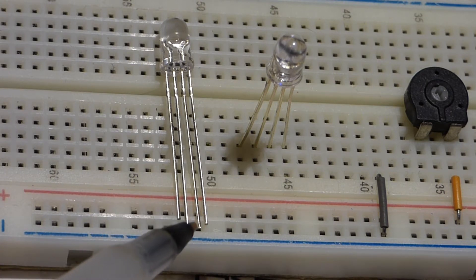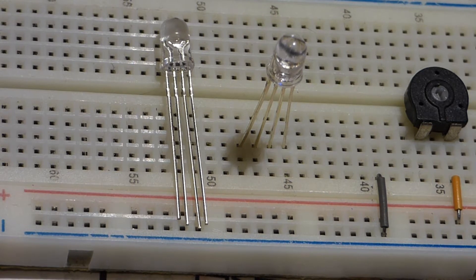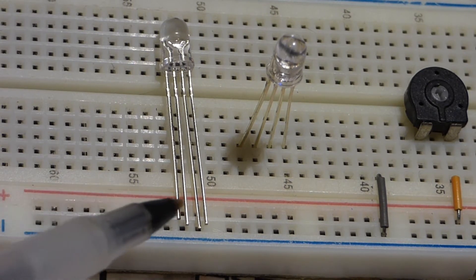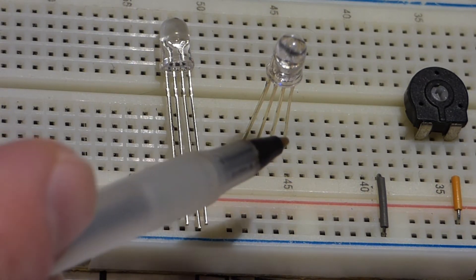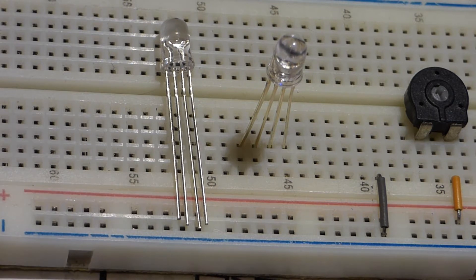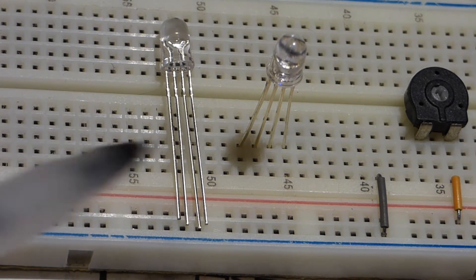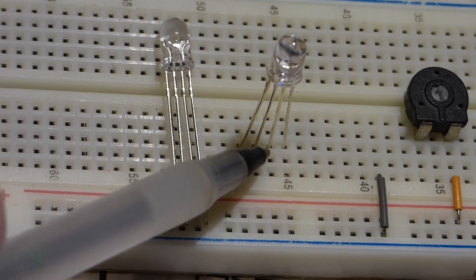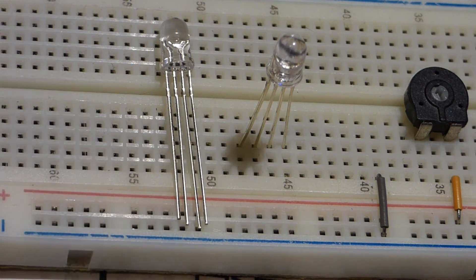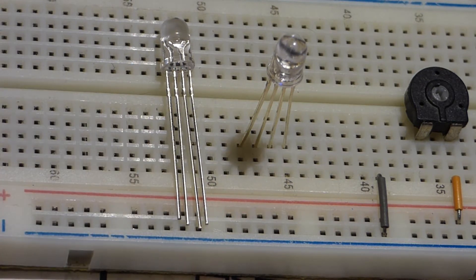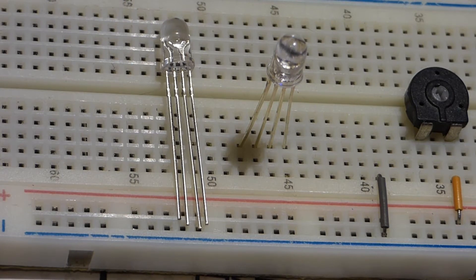The cathode in this case is the longest pin. Now sometimes that longest pin is the anode and the other three pins are the cathode. But in this case the long pin is the cathode and then the three other pins are the anodes for the three different colored LEDs.